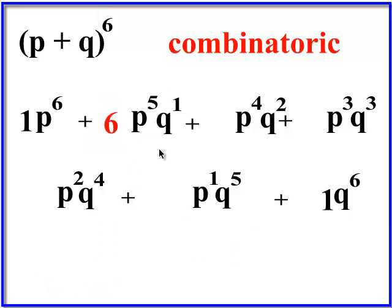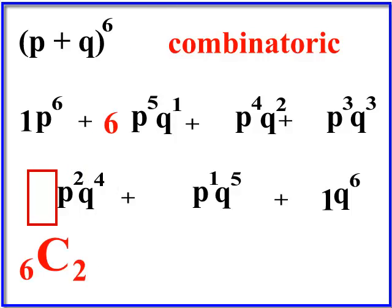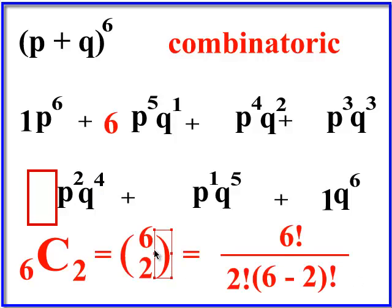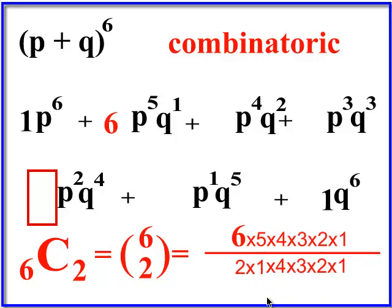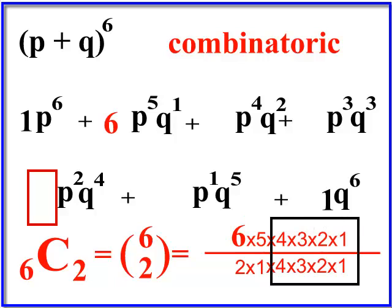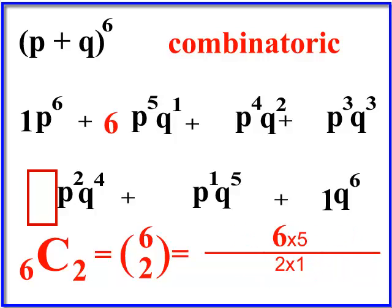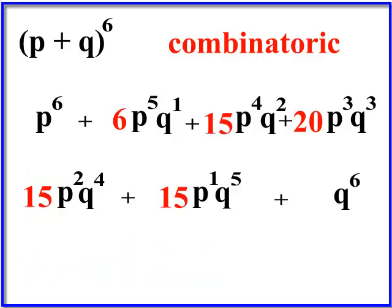Let's pick one more term at random. We'll do six choose two, because the p exponent is two — you could have picked four and gotten the same number. Six factorial over two factorial times four factorial: four times three times two times one cancels top and bottom, leaving 30 over two, which is 15. So that coefficient is 15, and you get the exact same answers as before. That's the combinatorics method.